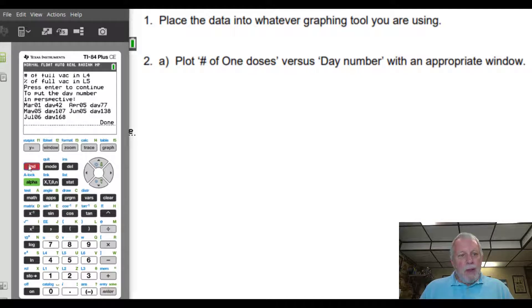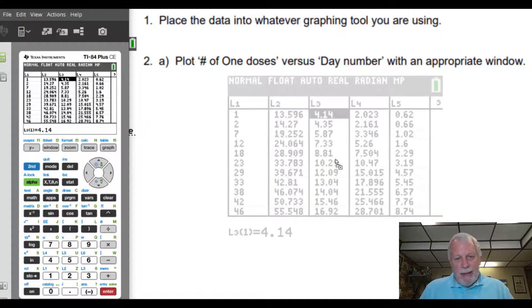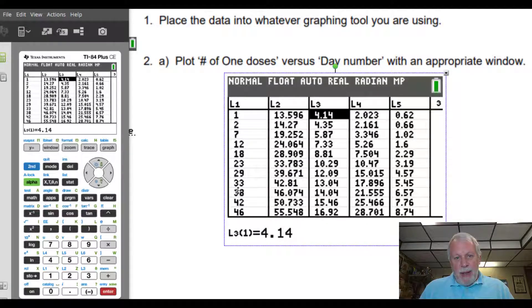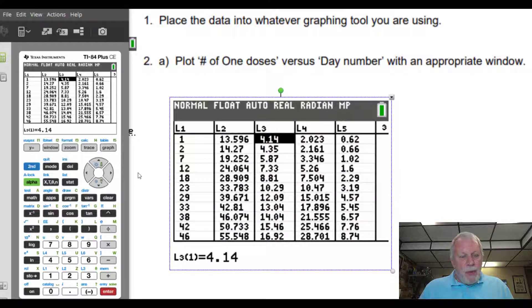Also, just to put it in perspective, here are some dates to tell you like March 1st is day 42 and so on. So let's go to stat edit and see that there is the data in the list, day number and then number of doses, dose ones, and then percentage, two doses, percentage of population and so on. By the way, these are in millions. I should tell you the number of people are in millions. So this is 13.596 million people.